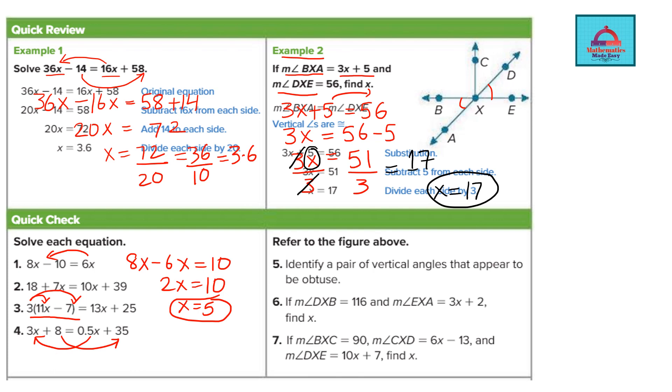Now refer to the above figure. Identify a pair of vertical angles that appear to be obtuse. Now we have to look at the obtuse angle. Remember obtuse angle is an angle which is more than 90 but less than 180.